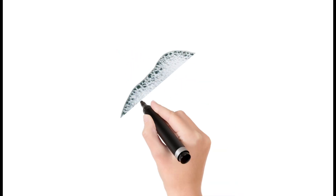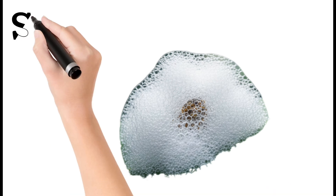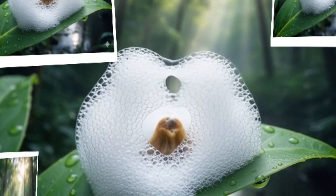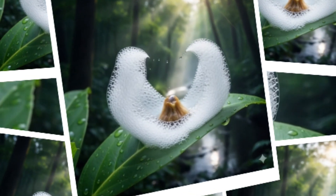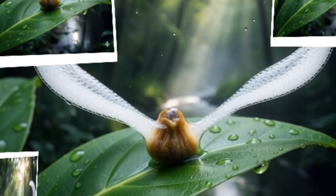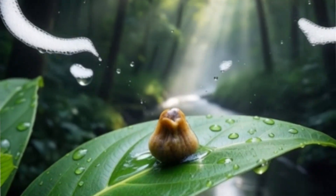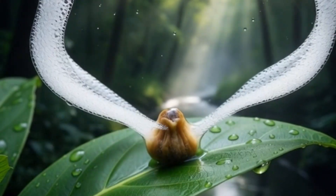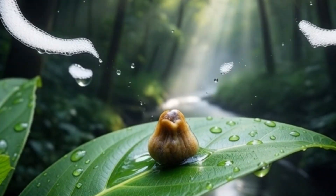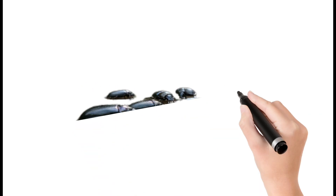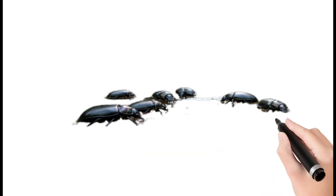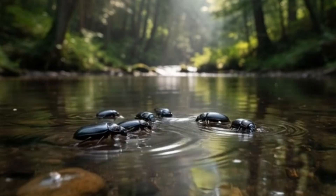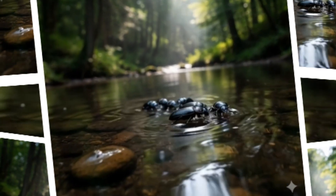Next, spittlebug: produces a foamy mass on plants. Nymphs hide inside the foam. Feeds on plant sap. Adults jump long distances. Found in farms and gardens.